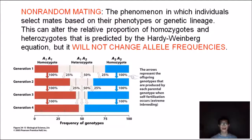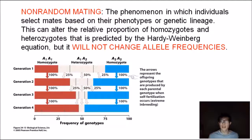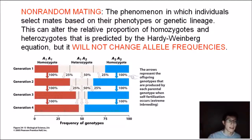To clarify, the phenomenon in which individuals select mates based on their phenotypes or genetic lineage is just non-random mating, which makes a lot of sense logically. This can alter the relative proportion of homozygotes and heterozygotes predicted by your Hardy-Weinberg equations. So you're going to see changes in genotype frequency, but you will not change the allele frequency — and that's pretty important.